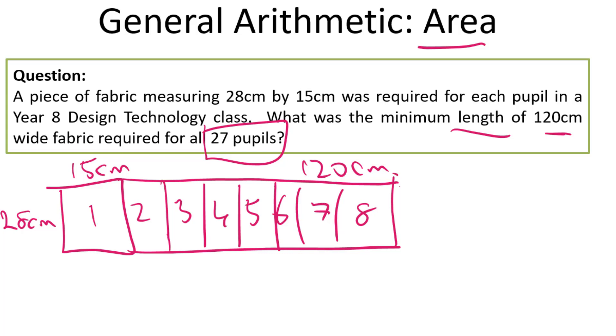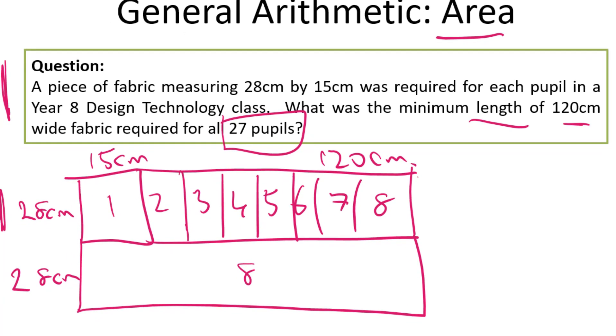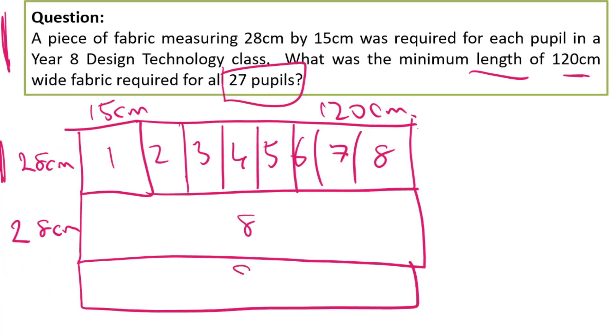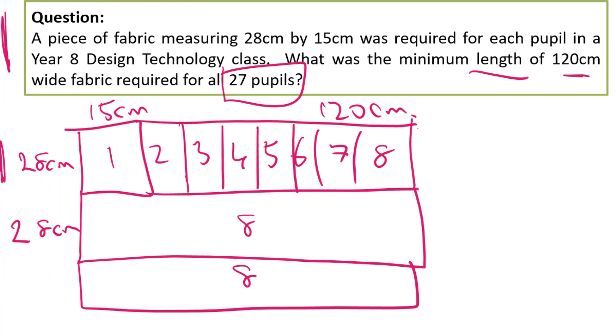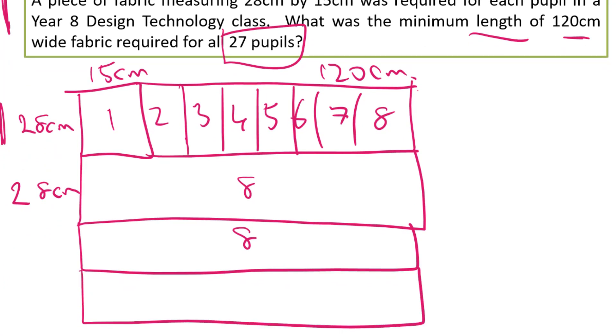Imagine rolling out this fabric a bit longer, another 28 centimeters, well that's enough for another eight pupils. And we can do that again for another eight, that's enough for 24 pupils now, which is almost enough, but we need to roll it out one more time to get up to our, well that would be enough for 32 pupils, but certainly enough for the 27 pupils.